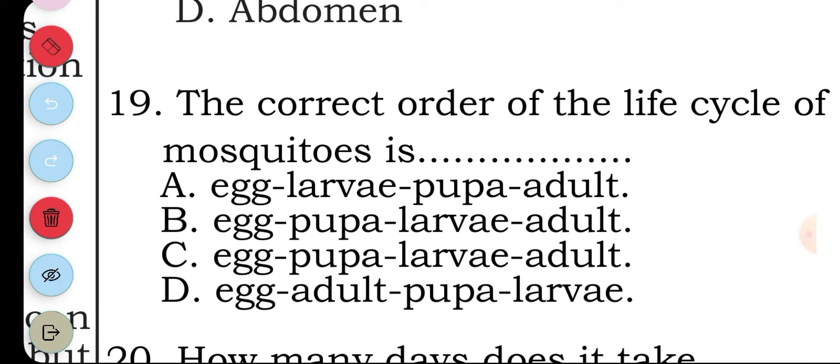Question nineteen: the correct order of life cycle of mosquitoes is: A egg, larva, pupa, adult; B egg, pupa, larva, adult; C egg, pupa, larva, adult; D egg, adult, pupa, larva. Looking at A and B, the answer is A: egg, larva, pupa, adult.